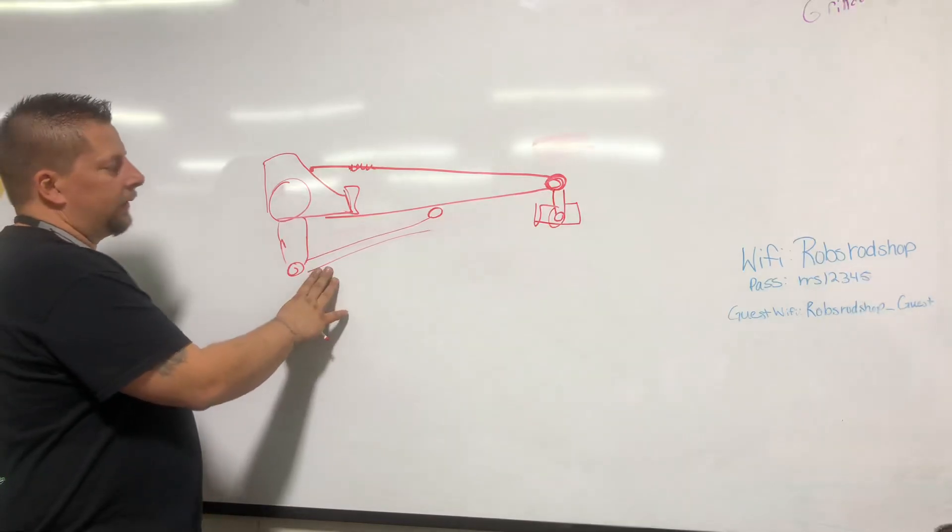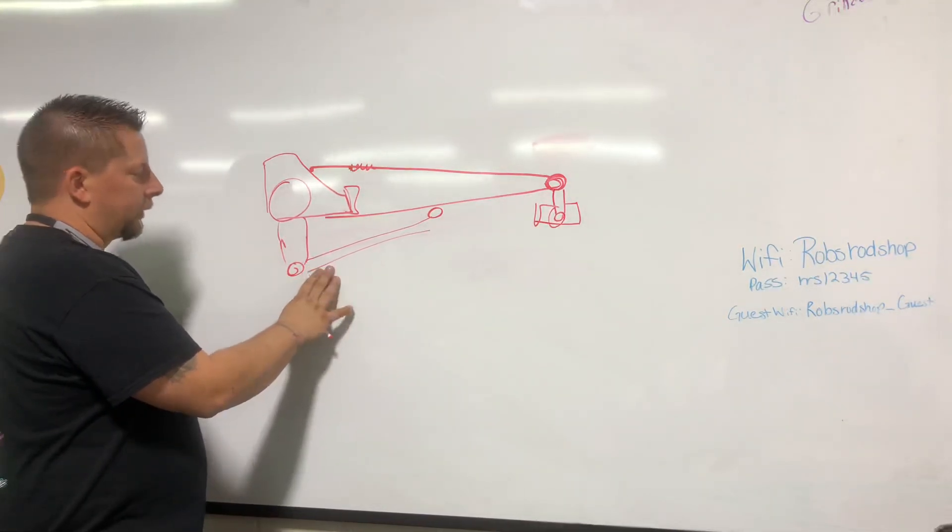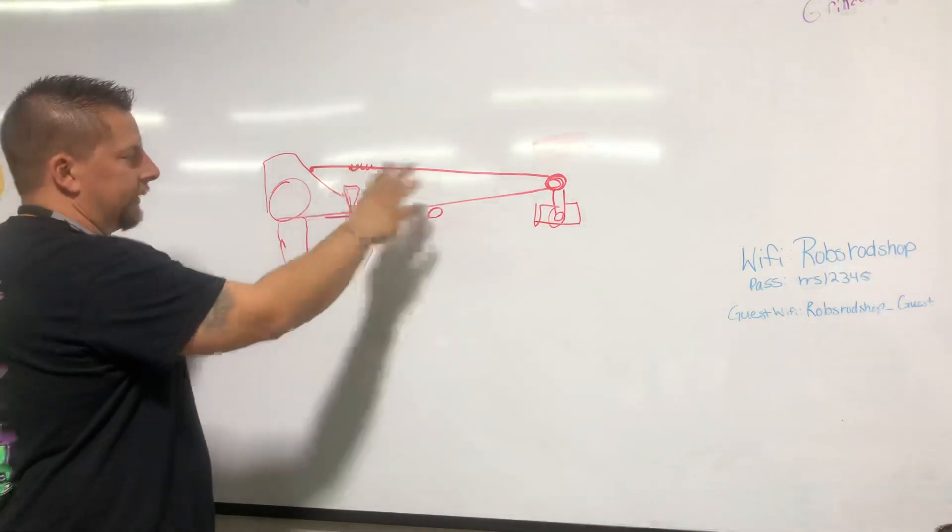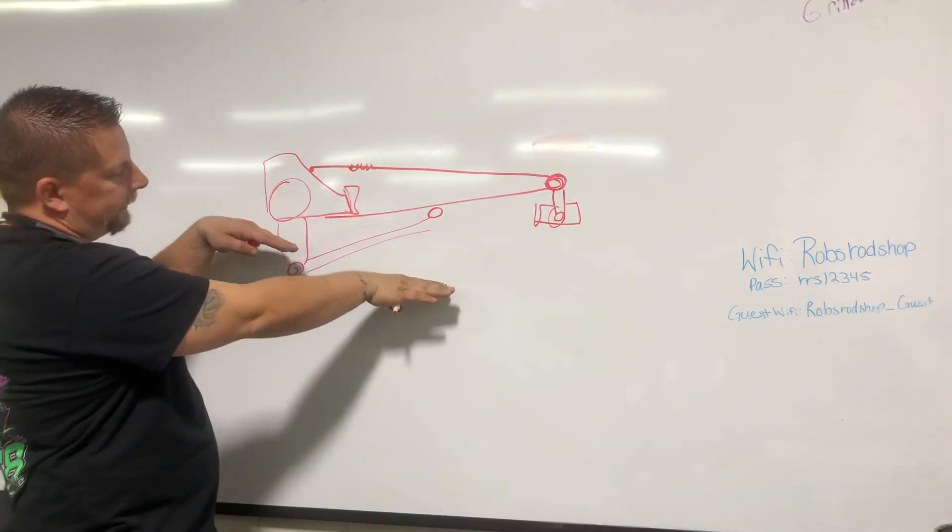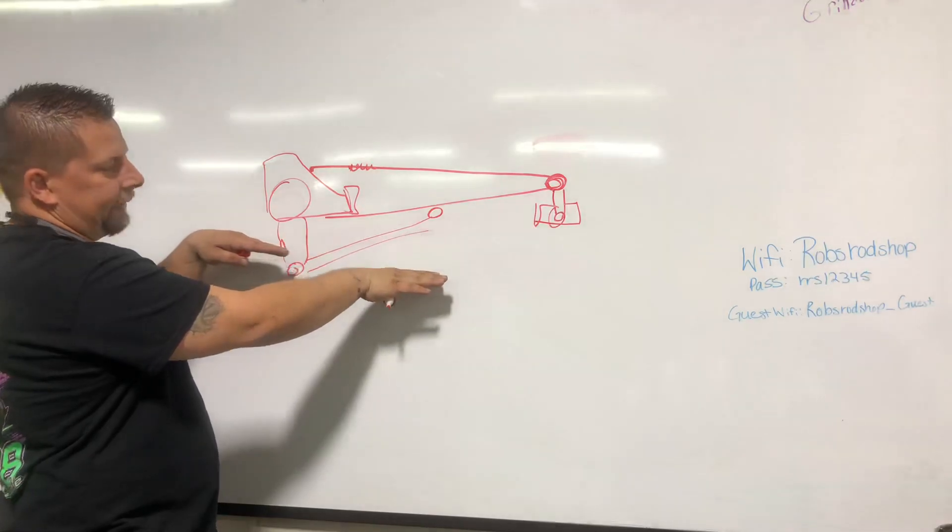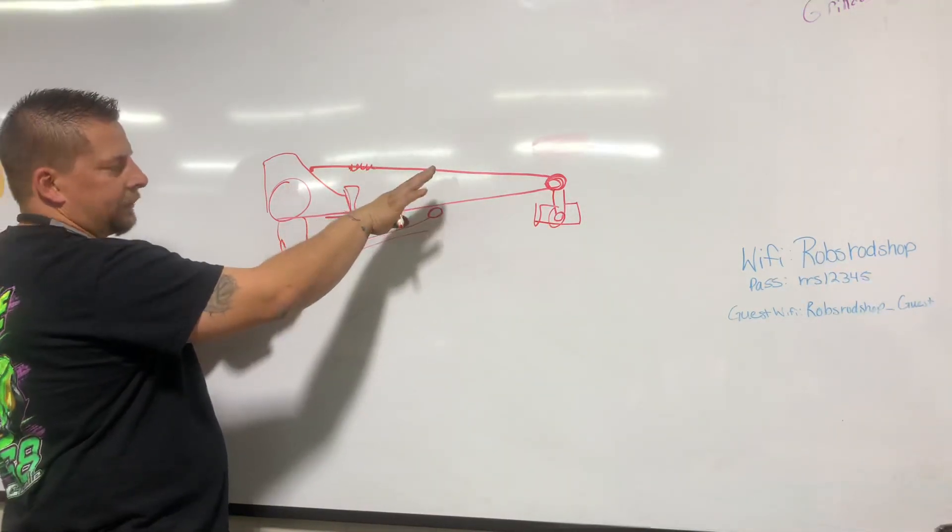There's nothing you can do for anything else. So if you have too much bite in it, then you're going to want to flatten this bar out. If you don't have enough bite in it, then you need to raise this bar up.